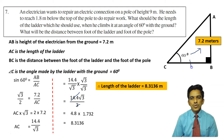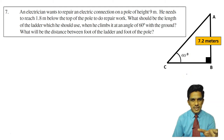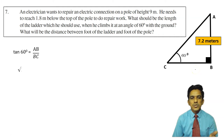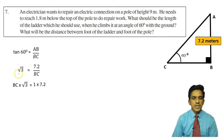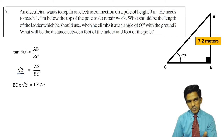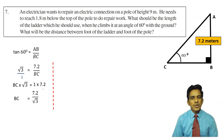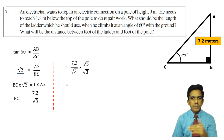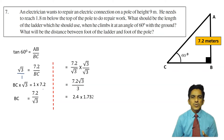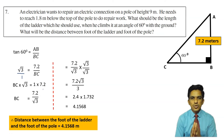Now we have to find the distance between the foot of the ladder and the foot of the pole, that means we have to find BC. Let us take tan 60. Tan 60 is AB by BC. Tan 60 is root 3, so root 3 is equal to 7.2 by BC. BC is equal to 7.2 divided by root 3. Rationalize: 7.2 root 3 by 3, which is 2.4 root 3. 2.4 into 1.732 is 4.1568. Therefore the distance between the foot of the ladder and the foot of the pole is 4.1568 meters.